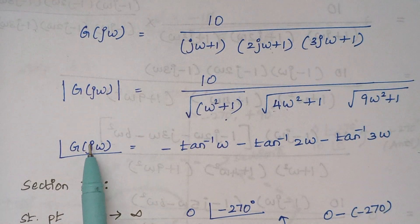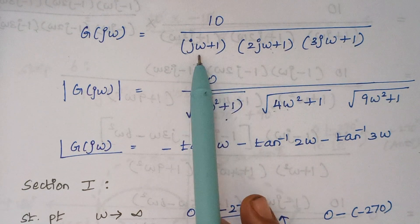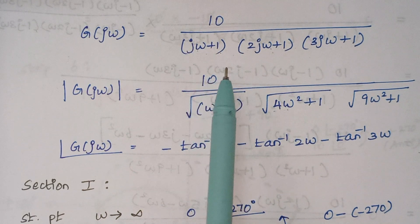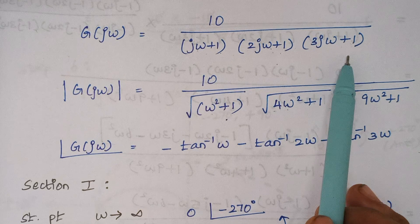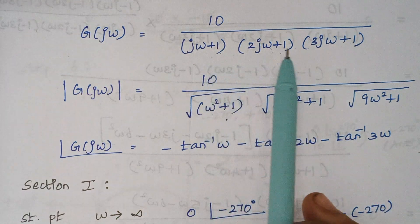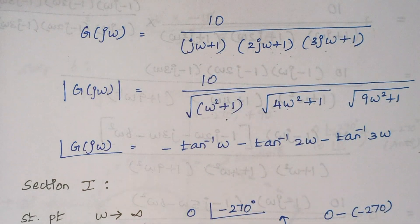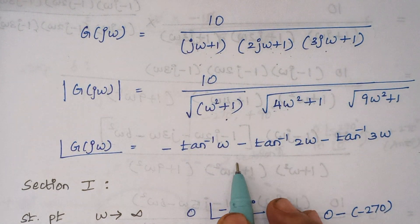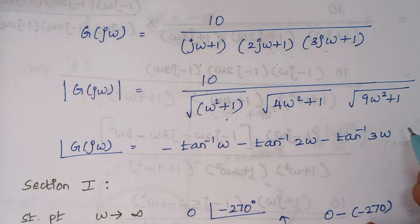Next we find the expression for phase angle using the formula tan⁻¹(imaginary/real). For each denominator term: tan⁻¹(ω/1) = tan⁻¹(ω), tan⁻¹(2ω), and tan⁻¹(3ω). Since these are denominator terms, we shift them to the numerator and include a minus sign. So the phase angle is: −tan⁻¹(ω) − tan⁻¹(2ω) − tan⁻¹(3ω). This is our expression for phase angle.